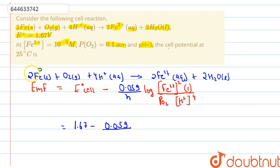So change is plus 2 but there are 2 ferrous. So we will multiply this by 2. This becomes 4. So 4 is the number of electrons which are taking part in this reaction. So this is 4.